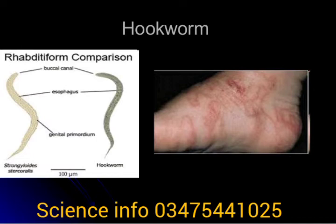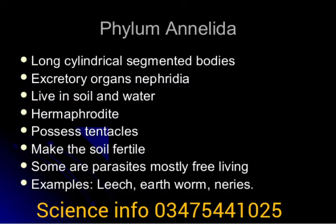Annelids are triploblastic coelomates with bilateral symmetry. They are found in freshwater, damp soil — like earthworms — and include parasites like leeches. They have a digestive system with two openings, mouth and anus, and a lobed structure in the mouth known as the prostomium. Excretion takes place by nephridia.